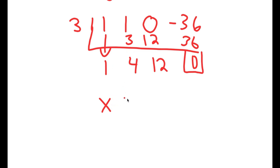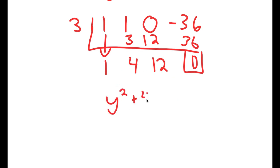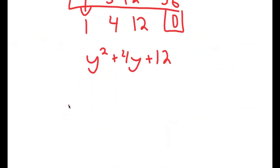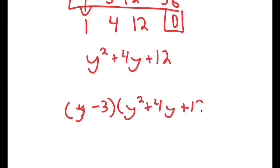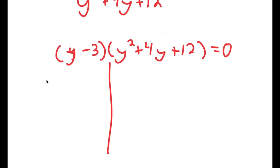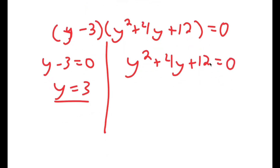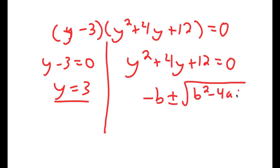The quotient is y squared plus 4y plus 12, meaning y cubed plus y squared minus 36 factors as y minus 3 times y squared plus 4y plus 12, equal to zero. This gives me two equations: y minus 3 equals zero, meaning y equals 3 — which we already know — and y squared plus 4y plus 12 equals zero.